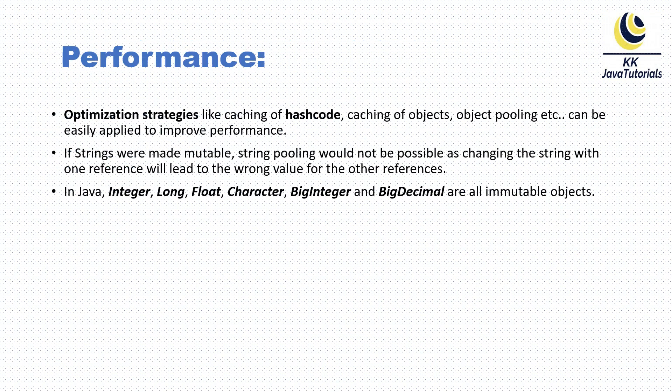The first reason to make a String class immutable is for better performance. When we talk about optimization strategies, String class applies strategies like caching of hash code and object pooling to improve performance. When you use a HashMap, String is considered a very good key. Because String is an immutable class, its hash code can be easily cached, and in that way HashMap performance gets improved.